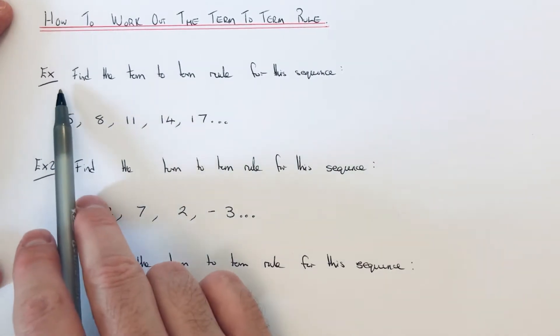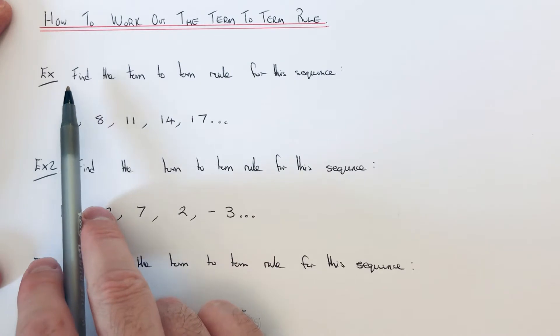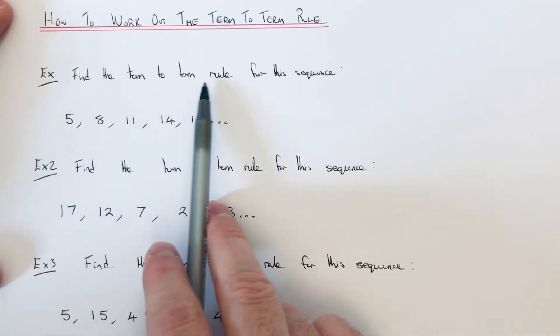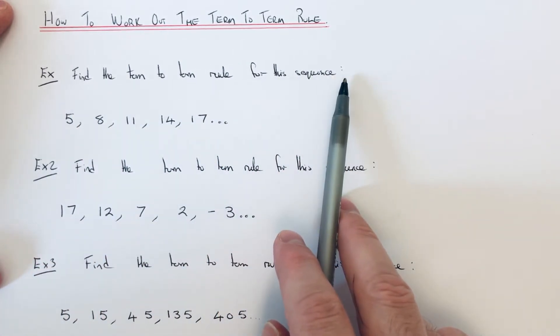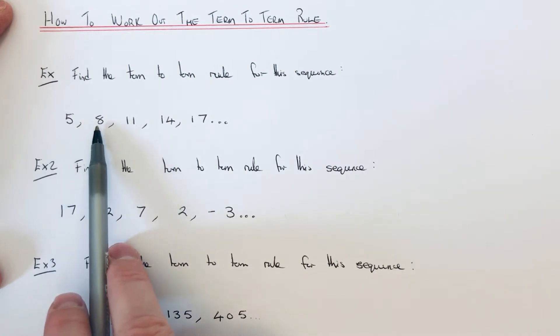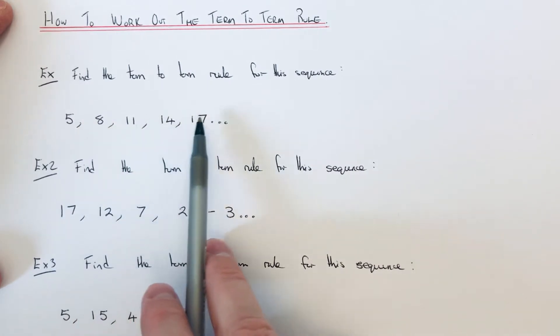Okay, so let's have a look at the three examples which we have here. Our first one is to find the term to term rule for this sequence. So we've got 5, 8, 11, 14, 17.